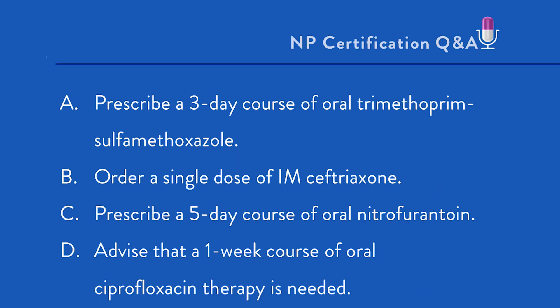Would it be A: prescribe a three-day course of oral trimethoprim-sulfamethoxazole, more commonly known as Bactrim? B: order a single dose of IM ceftriaxone, trade name Rocephin? C: prescribe a five-day course of oral nitrofurantoin, also known as Macrobid? Or D: advise that a one-week course of oral ciprofloxacin therapy is needed — ciprofloxacin, also known by its trade name Cipro.